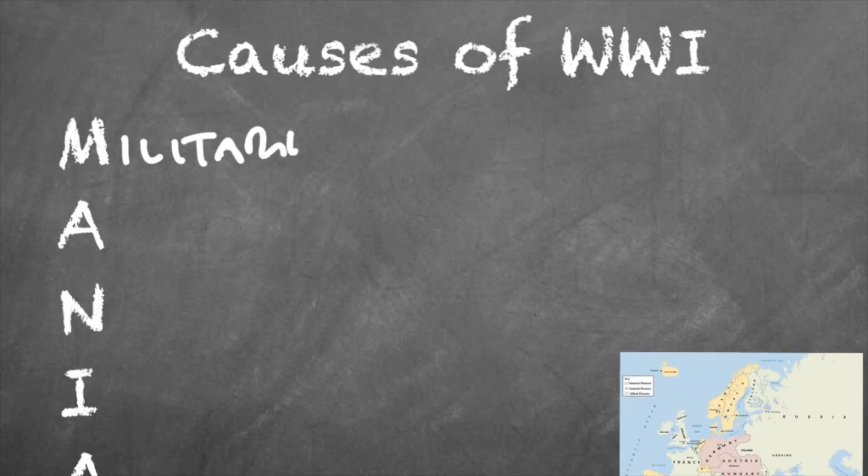Number four is the Zimmermann Telegram. Go back over the PowerPoint and look it up in the book. Basically it was Germany's attempt to keep the United States out of the war — but you need to know more detail than that. Number five is the United States entering the war, a pivotal moment. The US army didn't fight particularly well, but the new influx of troops was enough to end the war. It wasn't just one single event — it was a series of events.